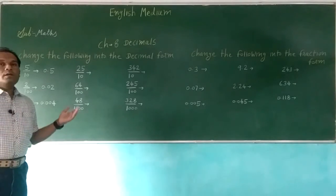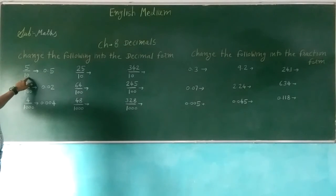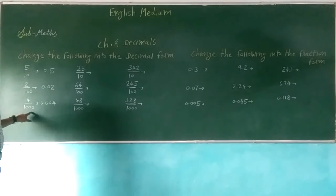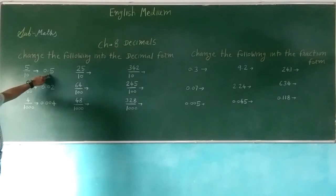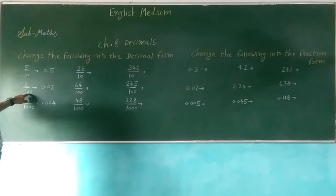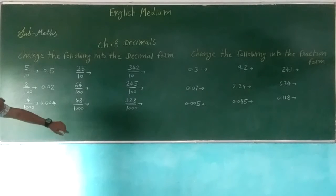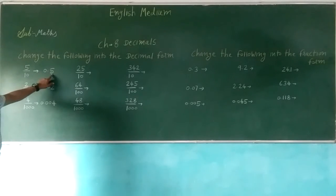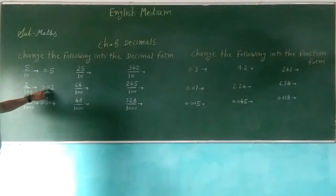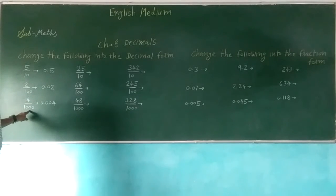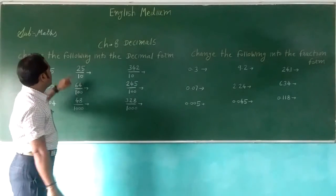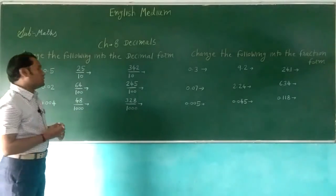You can see: 8 is given here, 100 is given here, 1000 is given, 10 is given. So decimal point 1 step moving for 10, 100 means 2 zeros so decimal point moves 2 steps, and 1000 has 3 zeros so decimal point moves 3 steps. So 0.5 is 1 step, 0.02 is 2 steps, 0.004 is 3 steps. Now we will see 25 by 10.